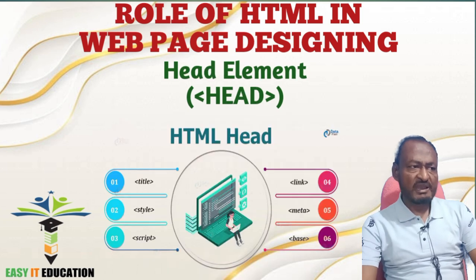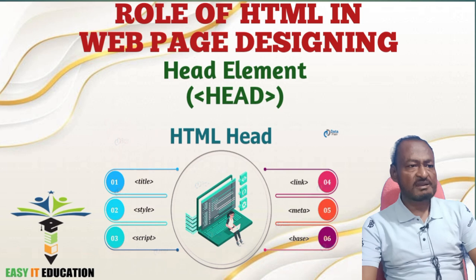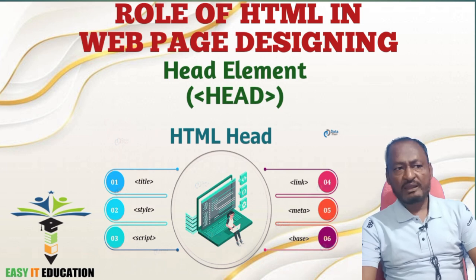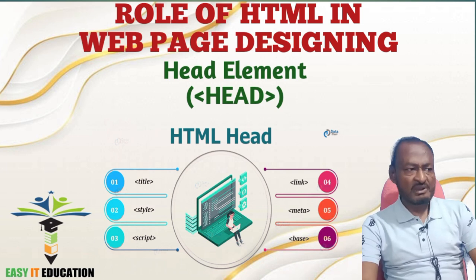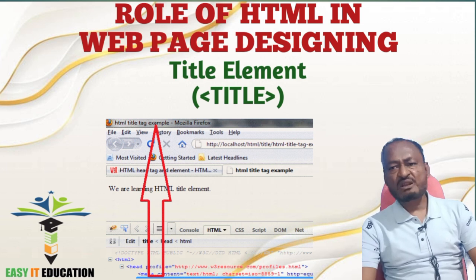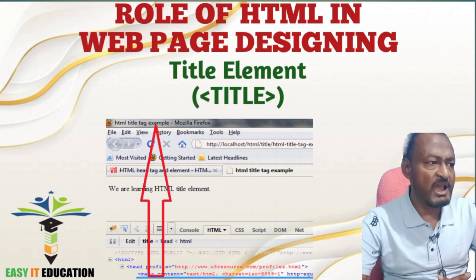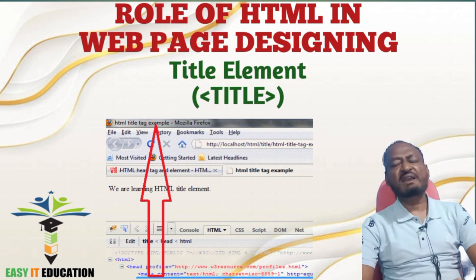Number 3: Head Element. It contains meta information about the HTML document such as the title, character encoding, linked style sheets, and scripts. Number 4: Title Element. It defines the title of the HTML document, which appears in the browser's title bar or tab.